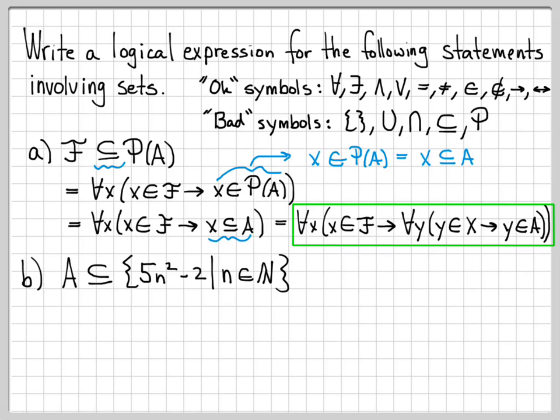What about A is a subset of the set 5N squared minus 2, such that N is in the natural numbers. How can we write this using our OK symbols? Well, first of all, let's work on the subset. We know what this means. We can replace the subset with the subset definition. It means that for all X where X is in A, this implies that X is in 5N squared minus 2, such that N is in N. That's just the definition of a subset.